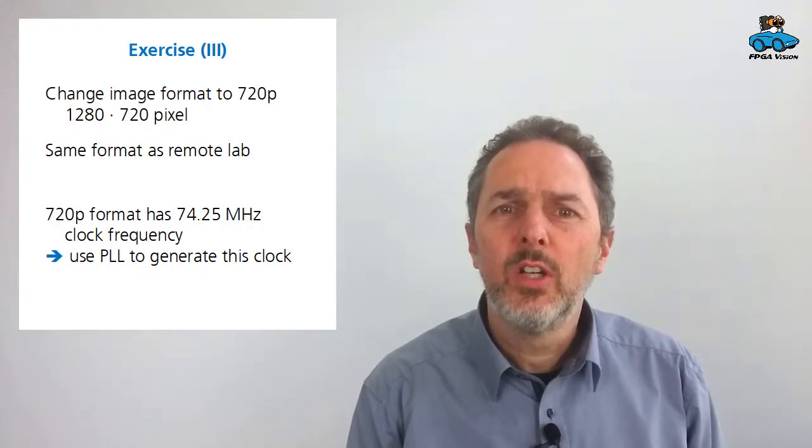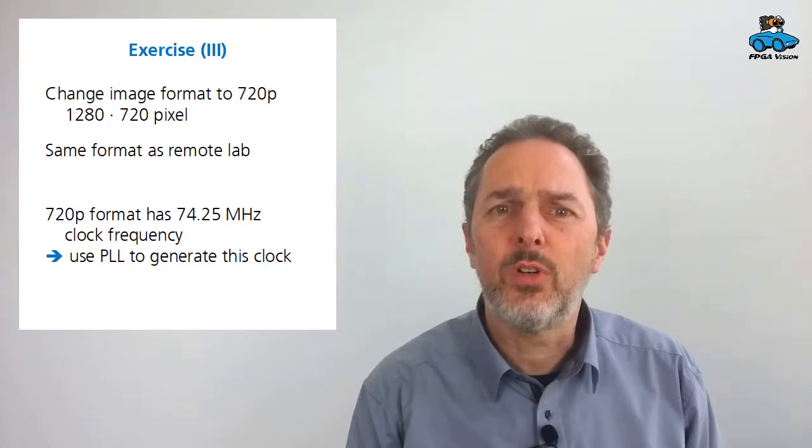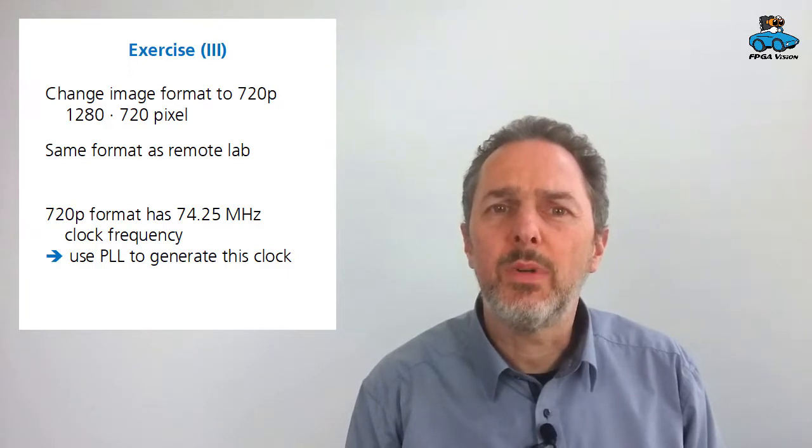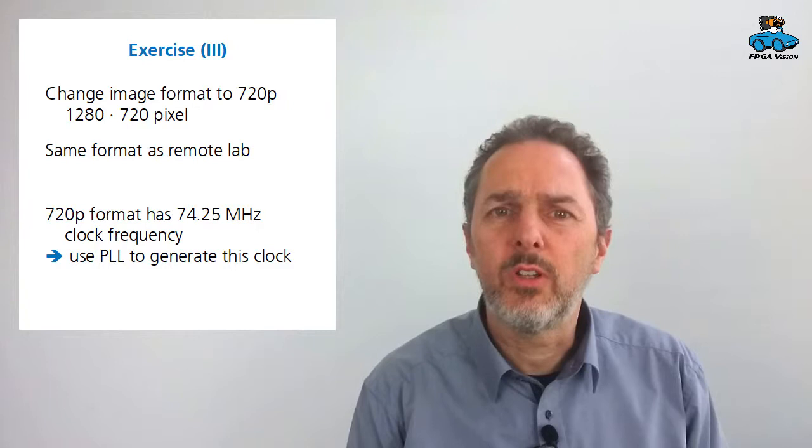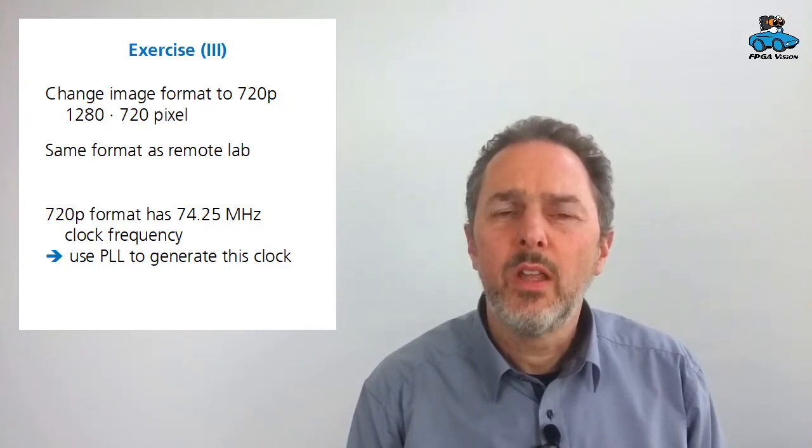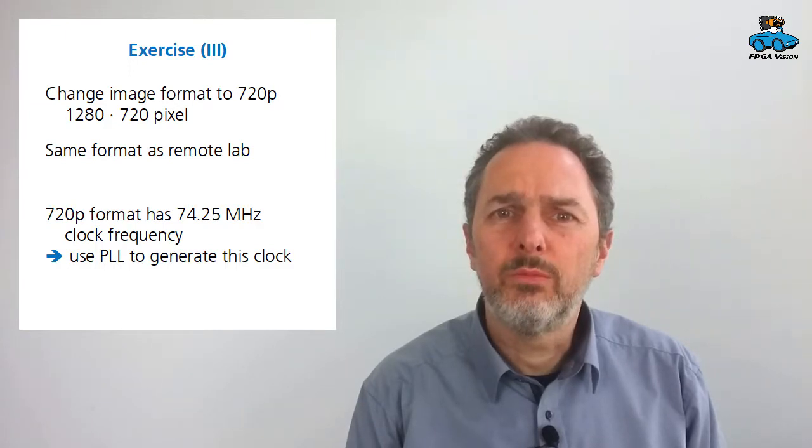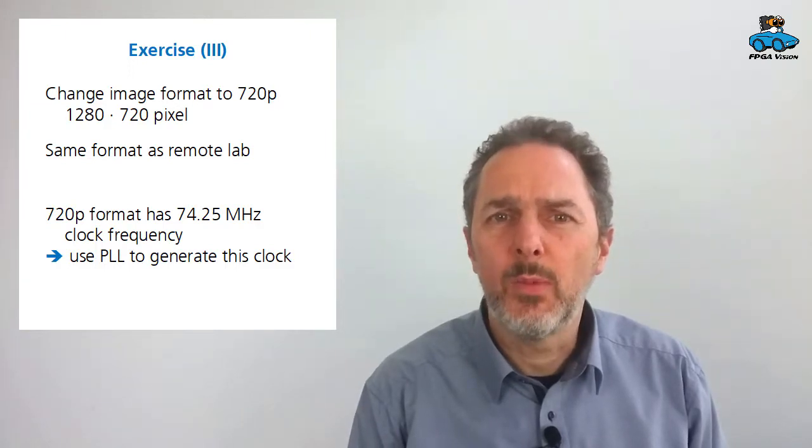As a third experiment you can change the resolution of the image from 640 by 480, so VGA, to 720p, so 1280 by 720 pixels. This is the same resolution as in the remote lab, so that allows you an easy switch between the board on your desk and the remote lab.